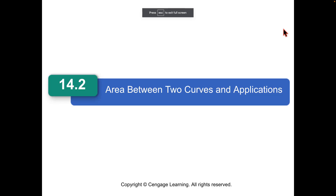What we're doing today is getting the area underneath the curve, but what we were doing Monday was underneath the curve and the x-axis. So if we think of the x-axis as the curve y equals zero, what we're doing today isn't anything new. We're just not making it the curve y equals zero — we're making it any random curve we want.